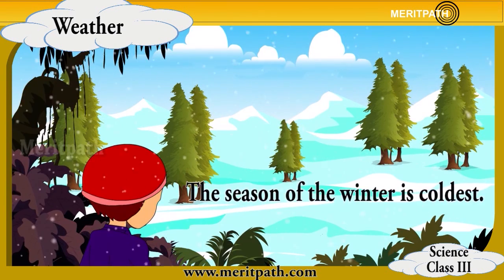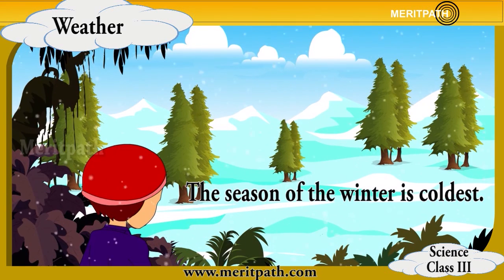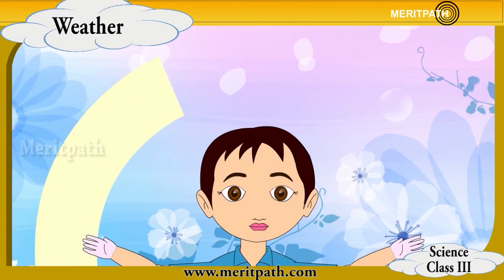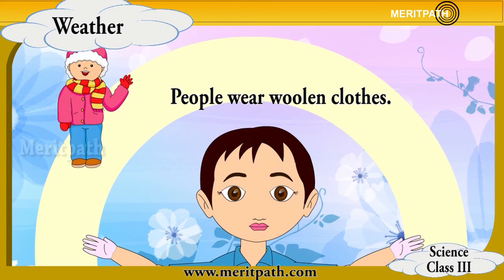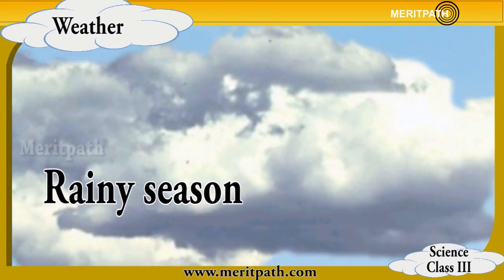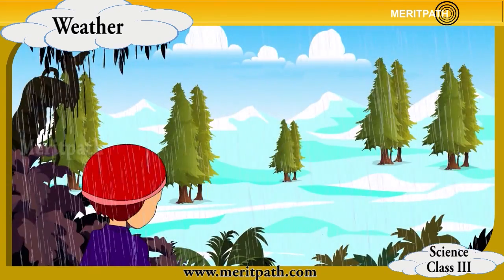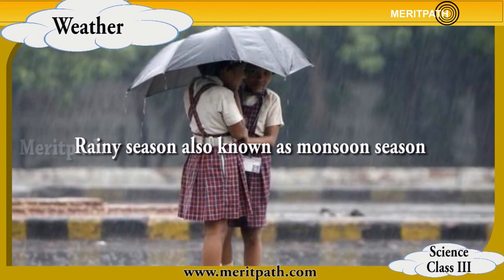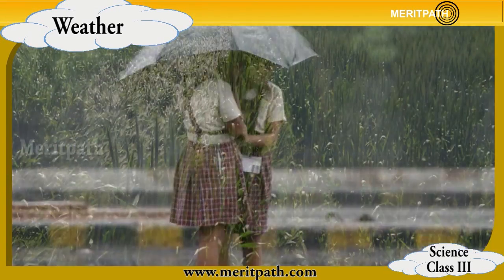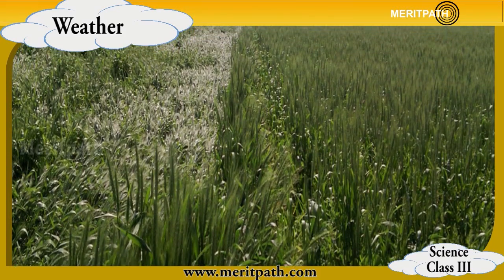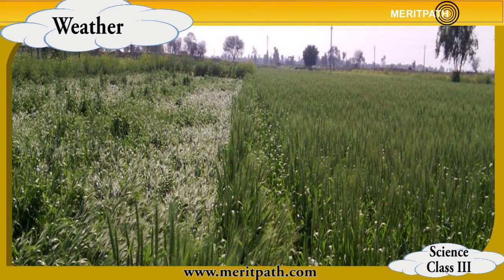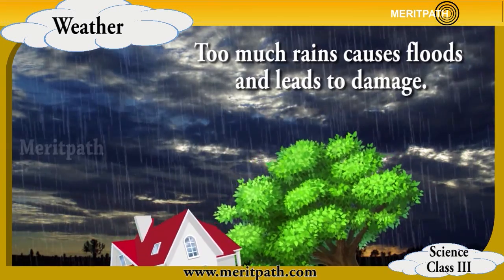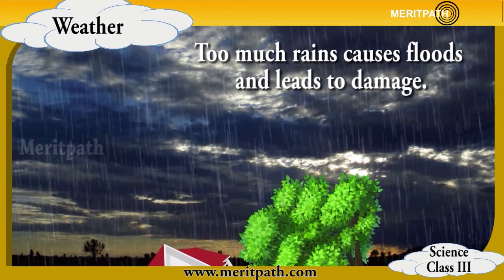The winter season is the coldest; the days are short and people wear woolen clothes. The rainy season is also known as the monsoon season. Good rains are very important for the growth of crops, but excess rain can also lead to their damage.